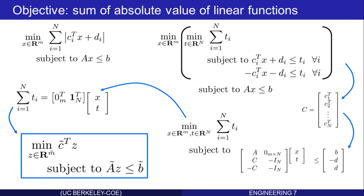In this unit we've learned how to transform functions that involve summations of absolute values and maximums back into linear programs in the standard form. There are lots of tricks like this, and if you look up linear programming transformations on Wikipedia you'll find these and other ideas on how to take problems that are not obviously linear programs and turn them into linear programs.